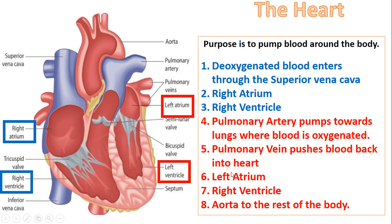After the blood has been to the lungs, it now becomes oxygenated — hence why it's red. Once the blood comes back from the lungs, it enters through the pulmonary veins into the left atrium, down into the left ventricle, and then it's pumped up through what we call the aorta, which is a really thick blood vessel, and then pumped to the rest of the body. The aorta is really thick and strong because it has to pump lots of blood to the whole body. Make sure you know the order that the blood travels and at which point it becomes oxygenated.